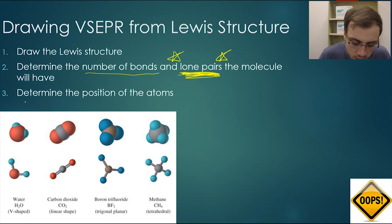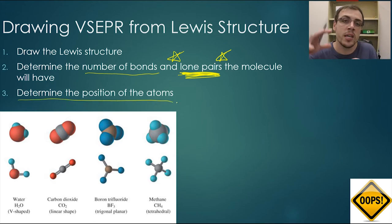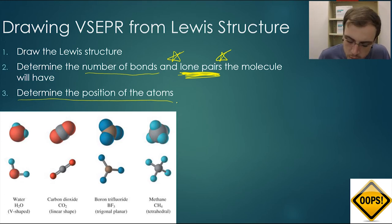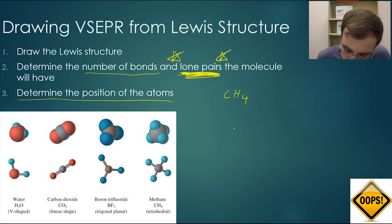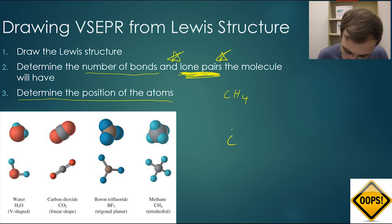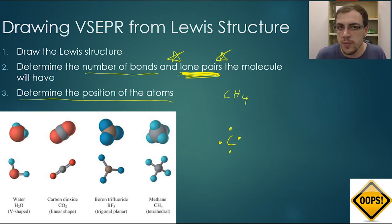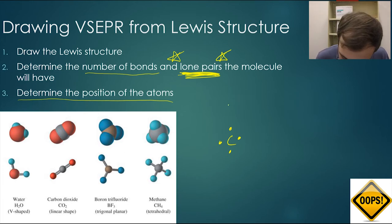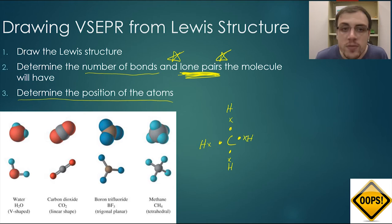Let's look at an example: methane. We draw our central atom, which is carbon. Carbon has four valence electrons on the periodic table, and carbon is bound to four different hydrogens. We've drawn our Lewis structure.